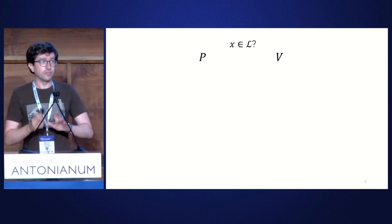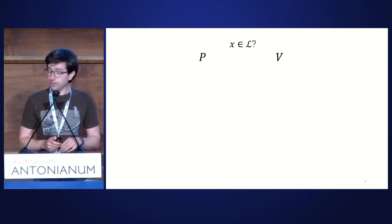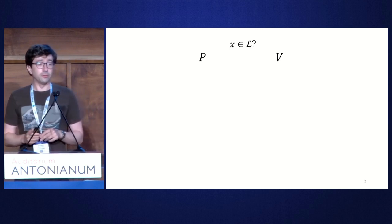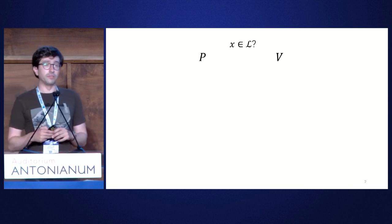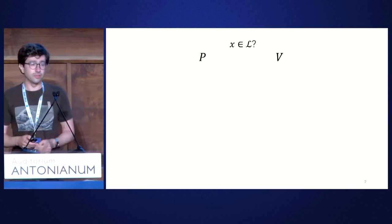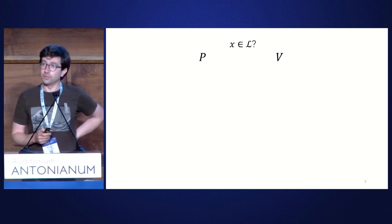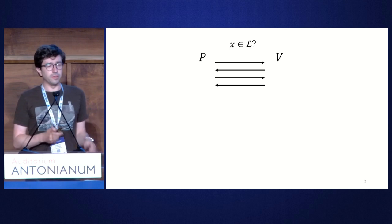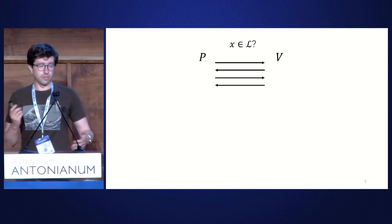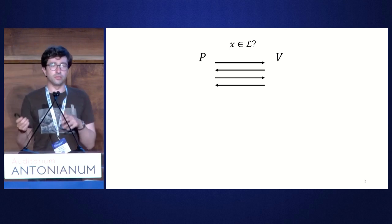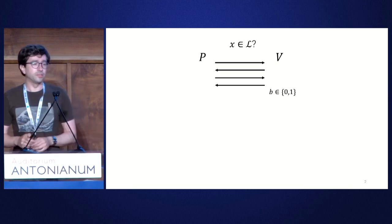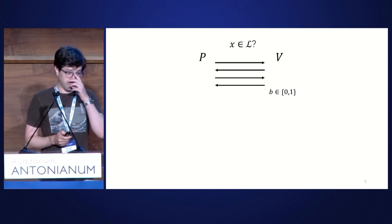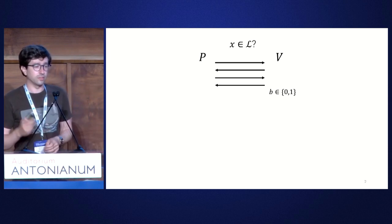Let's start with a template of what we're looking at. We have an interactive protocol with a prover and a verifier. The prover is trying to convince the verifier that some input X is in some language. They interact over some number of rounds; the prover sends messages, the verifier sends back challenges, and at the end the verifier outputs a decision bit — one if X is in L, zero otherwise.